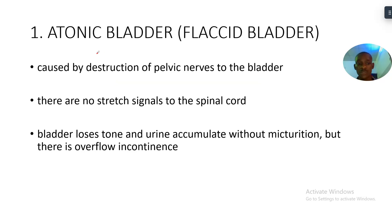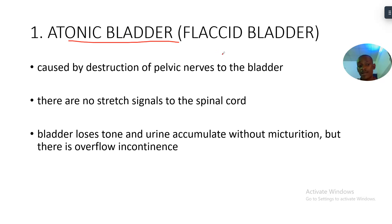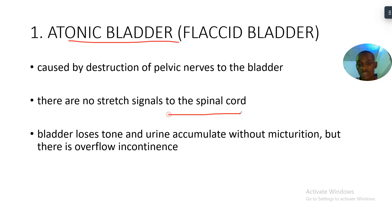First, we have the atonic bladder, also known as the flaccid bladder. This is a potential examination question. The atonic bladder is caused by destruction of the pelvic nerves. There are no signals sent to the spinal cord, and the bladder loses tone, causing urine to accumulate without micturition.